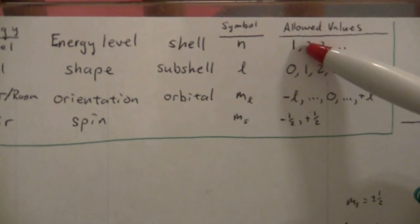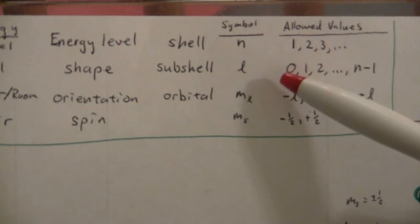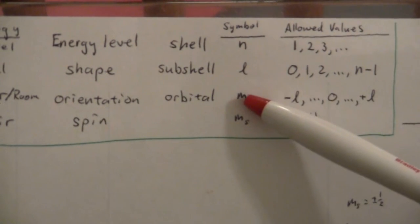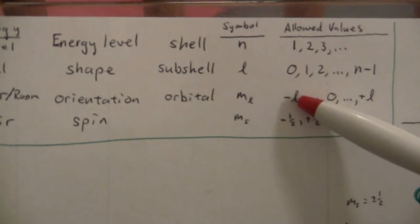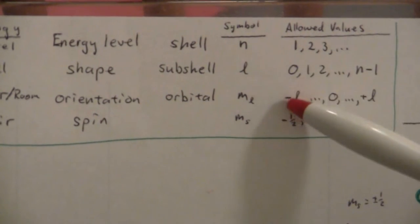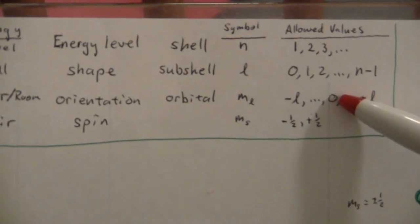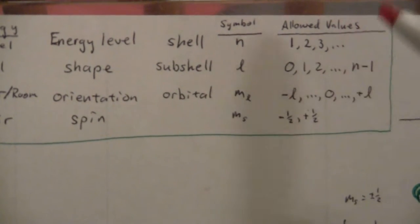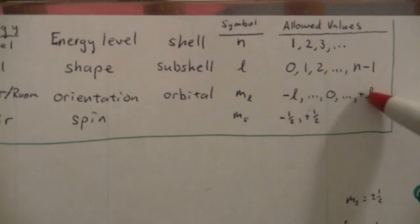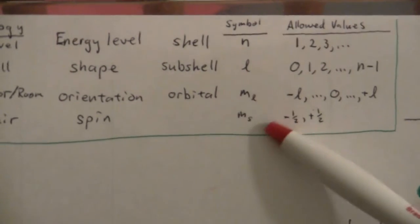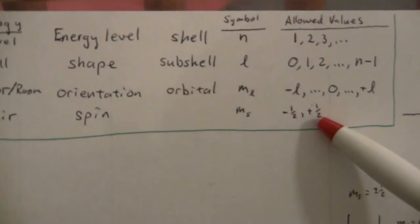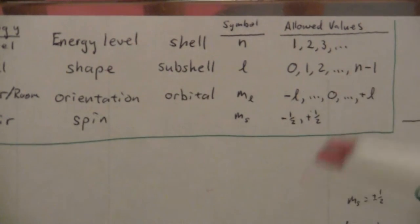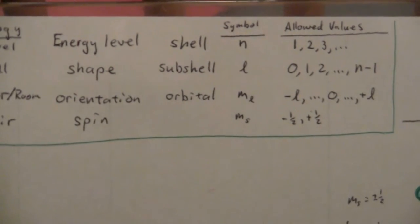Whereas if N is 2, 2 minus 1, L can go from 0 to 1, and so on and so forth. Then M sub L goes from negative L to positive L, and M sub S is always negative and positive 1 half. These restrictions, I think, will be clearer or easier to remember given this analogy.